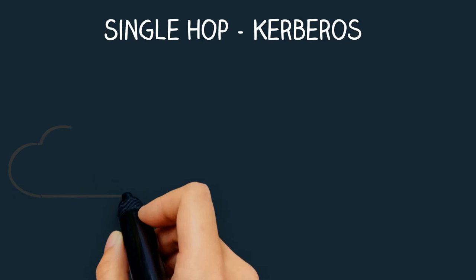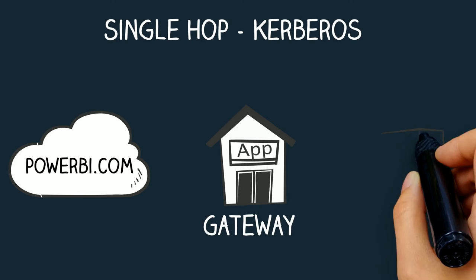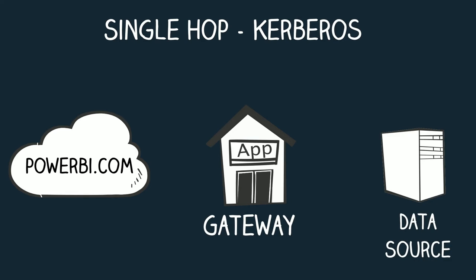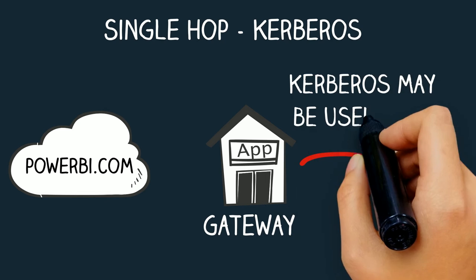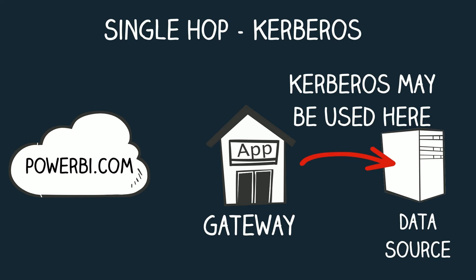That configuration has to do with your delegation settings and your service principal name, or SPN settings. Where Kerberos may come up is when you use your gateway and connect to, let's say, SQL Server — if the SPN is there, we're going to use Kerberos to connect from the on-premises data gateway to SQL Server. But this is just a single hop. Think of the gateway as a client application. So Kerberos and delegation are not required, but Kerberos can be used in that scenario. It has nothing to do with Azure Active Directory or the username passed through effective username to Analysis Services.